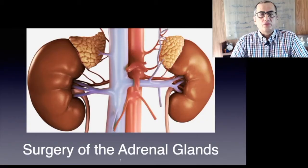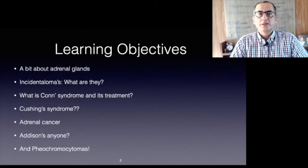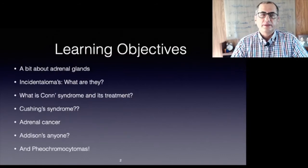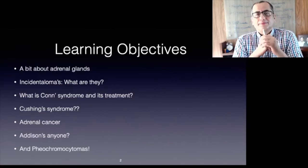Today we'll be looking at the adrenal glands. We will be talking about the glands themselves; I'll introduce you to incidentalomas, Conn's and Cushing's, a bit about Addison's, and finally pheochromocytomas.